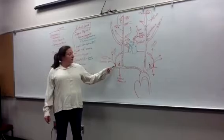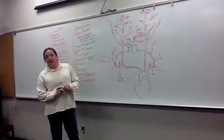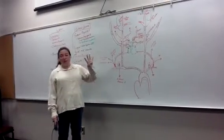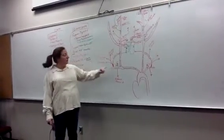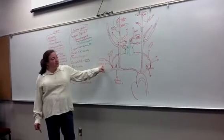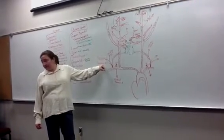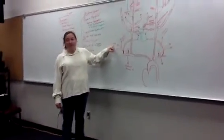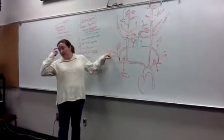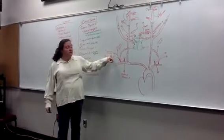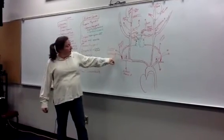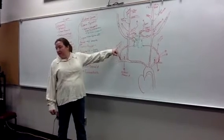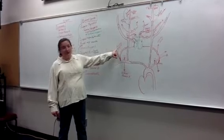The fourth branch off the subclavian is the thyrocervical trunk, coming off more anterior and slightly more lateral than the others. There are four branches off the thyrocervical trunk. First is the suprascapular artery, which joins the suprascapular nerve going to supraspinatus and infraspinatus. Then we have the transverse cervical artery, which heads off with the spinal accessory nerve. Note that the transverse cervical artery and nerve do not travel together. The next branch is called the ascending cervical artery.